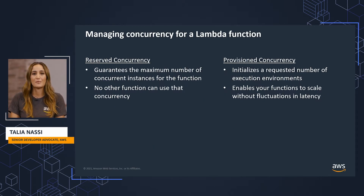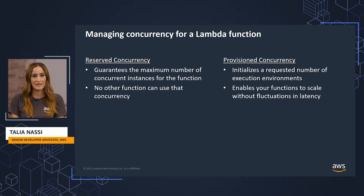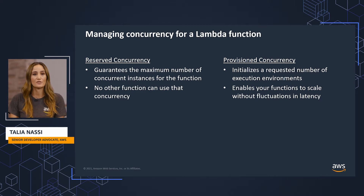Managing concurrency is an important aspect of running Lambda functions. Concurrency is the number of requests that your function is serving at any given time. When your function is invoked, Lambda allocates an instance of it to process the event. When the function code finishes running, it can handle another request. However, if the function is invoked again while a request is still being processed, another instance is allocated, which increases the function's concurrency.